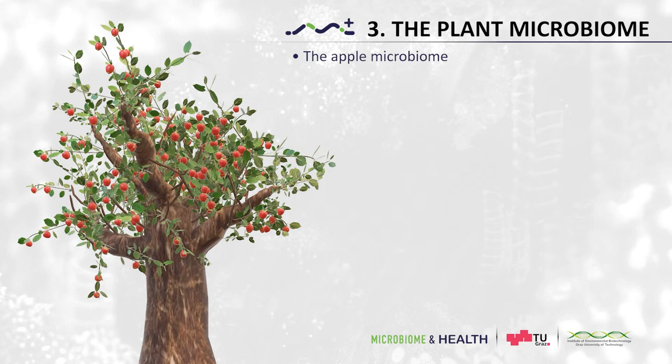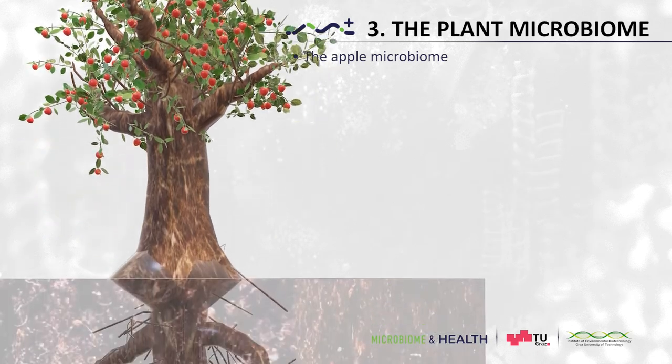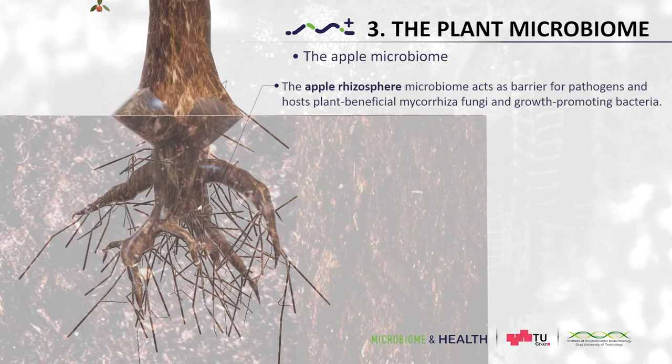In the previous chapter, you also learned that all plants consist of certain compartments where different metabolic conditions prevail, and that microbes colonize them based on their niche preferences and functional properties. The same is also true for the apple plant. The apple rhizosphere has been investigated intensively by plant pathologists due to economically important soil-borne diseases such as the apple replant disease. This disease is still of great concern since it is not caused by a single pathogen, but by a complex of pathogenic fungi, oomycetes and nematodes, and thus very difficult to control. The rhizosphere microbiome, however, can act as a barrier to reduce infection of roots by the pathogens. In addition, mycorrhiza and growth-promoting bacteria have been assigned to the apple rhizosphere.